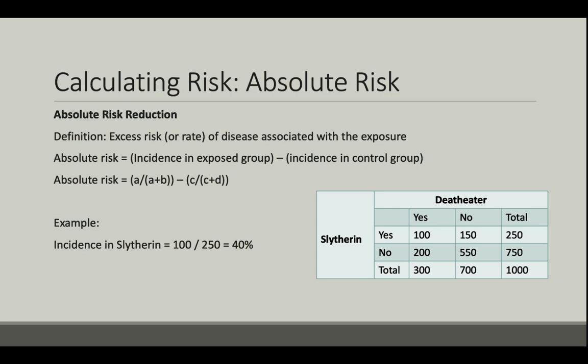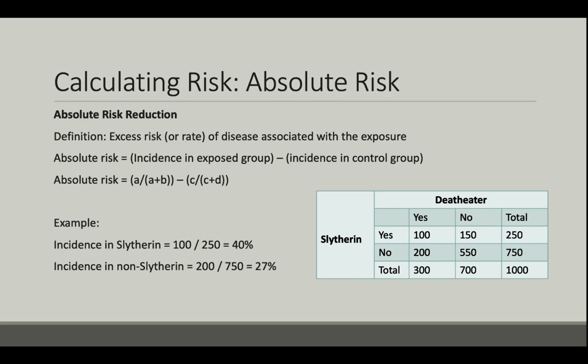The incidence of disease in those not exposed to Slytherin is similarly calculated: 200 new cases over 750 people in the at-risk population is 27%. Absolute risk reduction is a simple subtraction problem: 40% minus 27%, which gives us 13%.